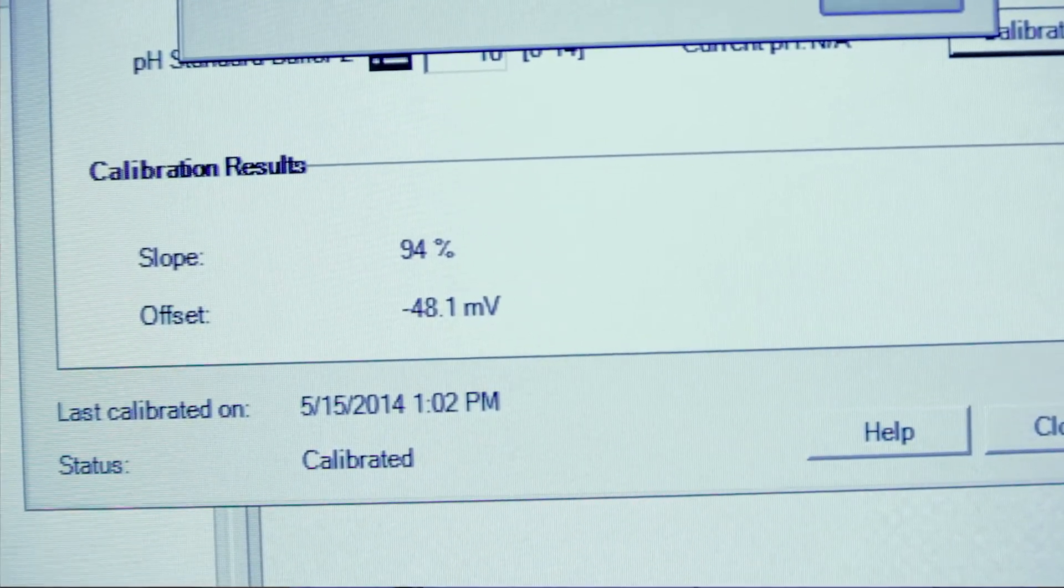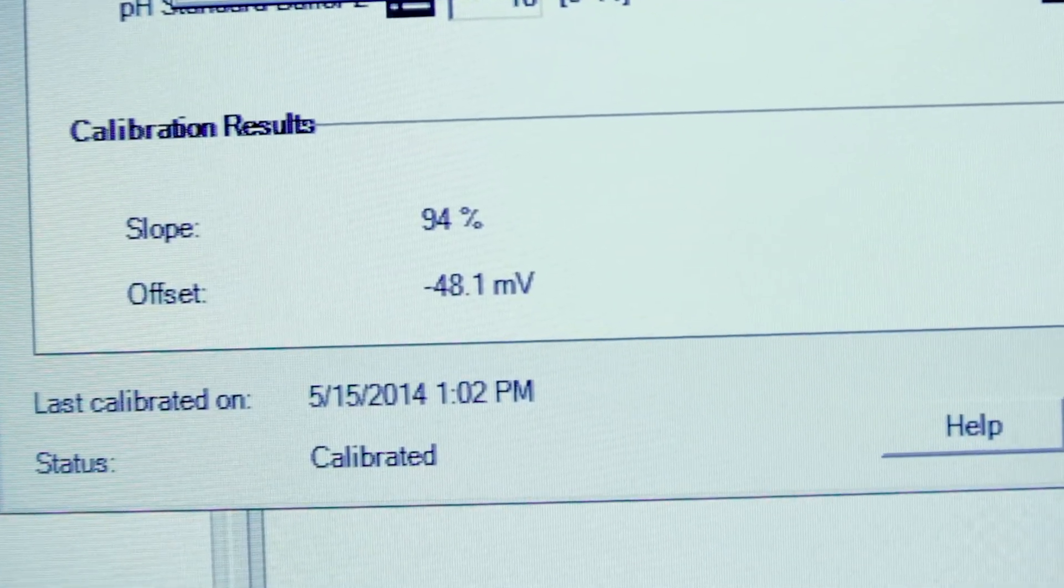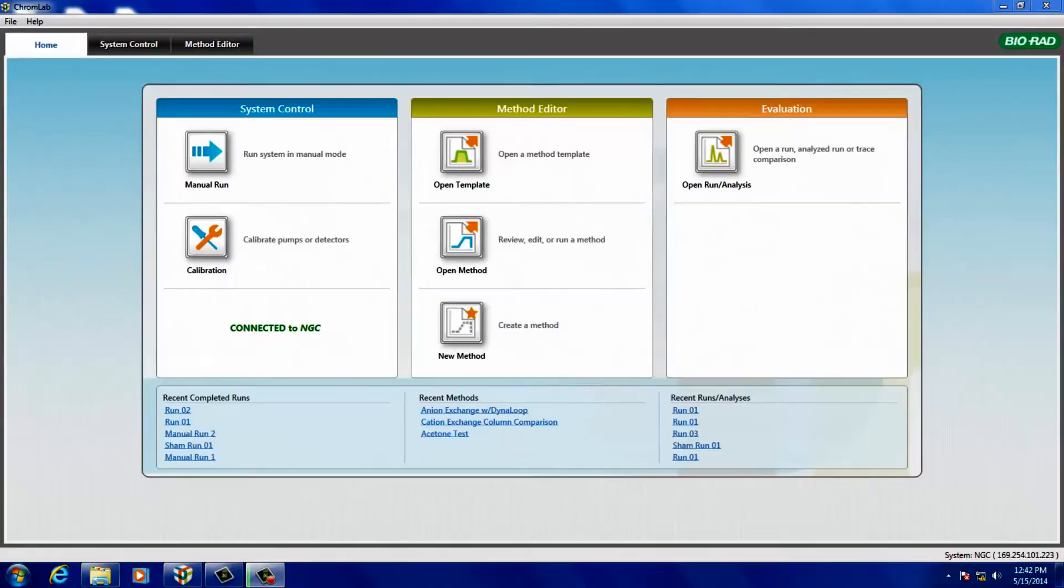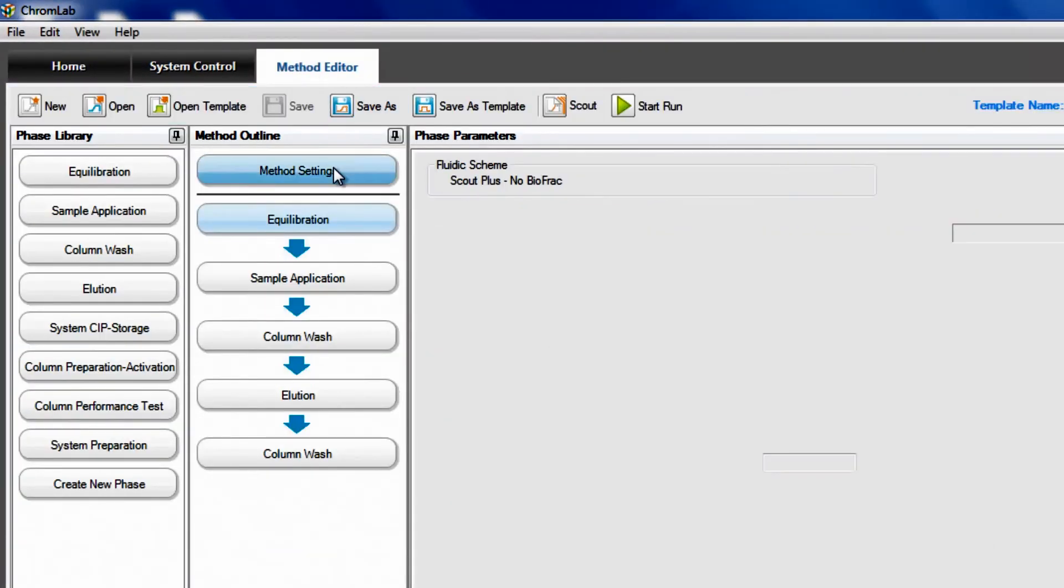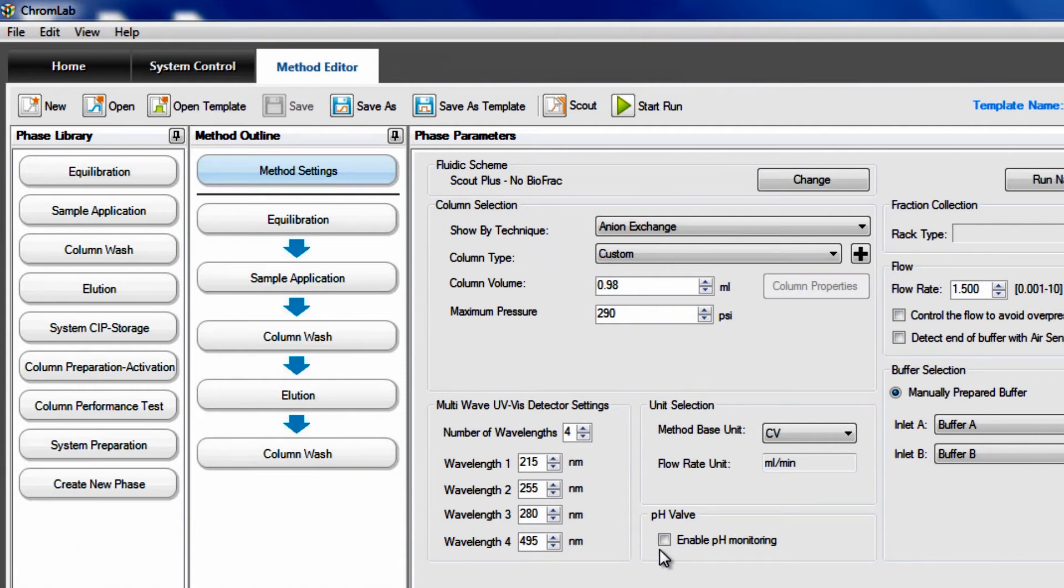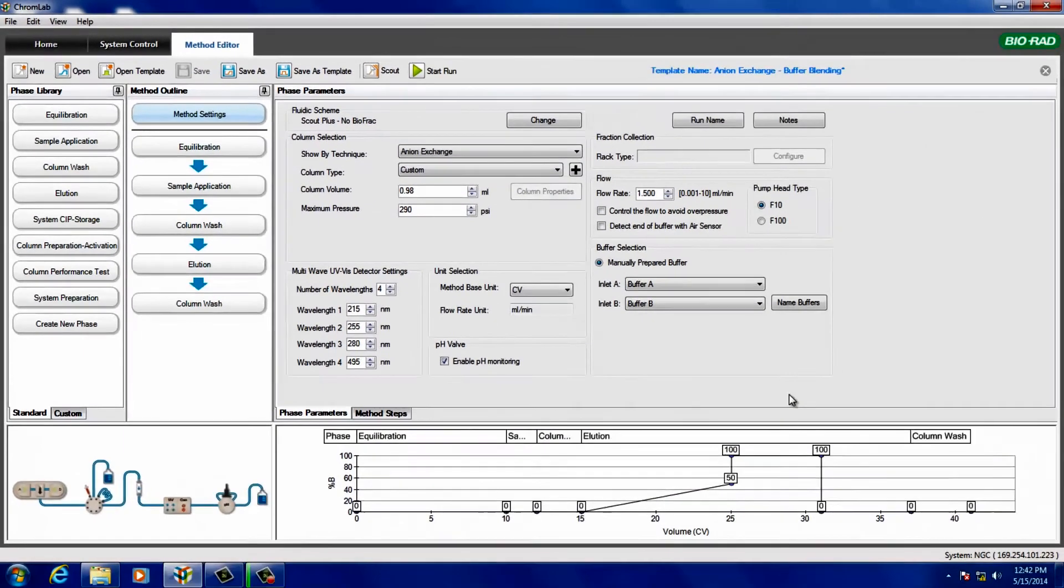When you are finished with the second solution, verify that the status at the bottom of the dialog box shows Calibrated. Now using the Method Editor, select Enable pH Monitoring under Method Settings to bring the pH probe in line or deselect the option to bypass the probe.